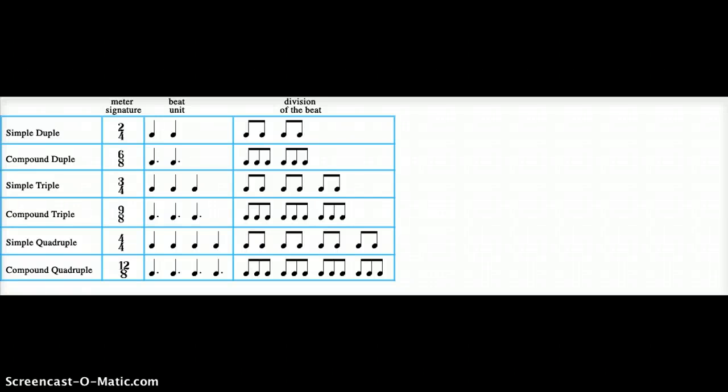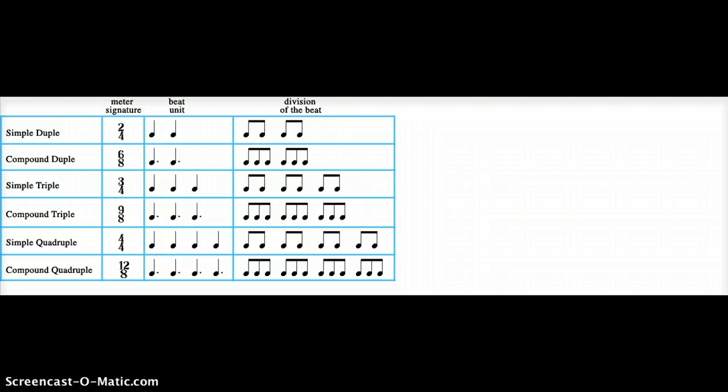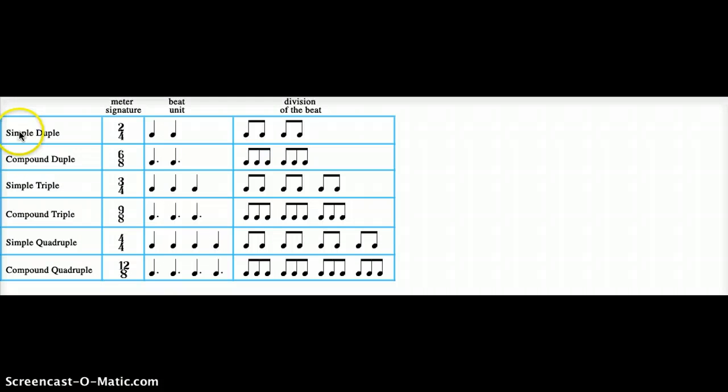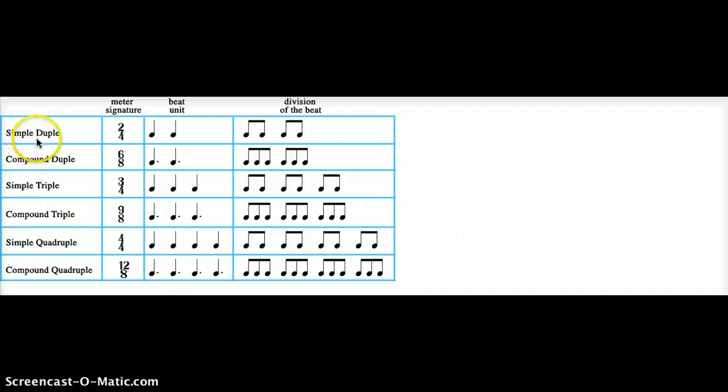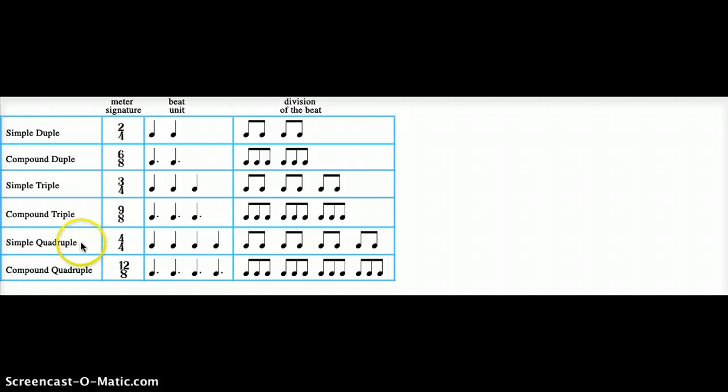This video lesson is about the proper identification of meters, or time signatures. When we do this, we'll be using two words. The first word will either be simple or compound, and the second word will either be duple, triple, or quadruple.